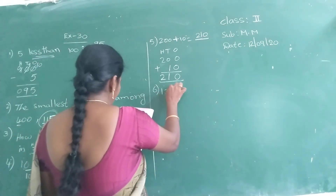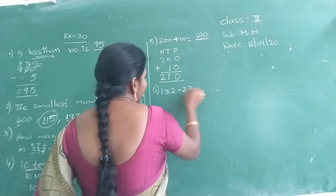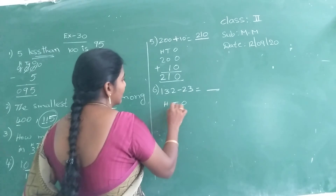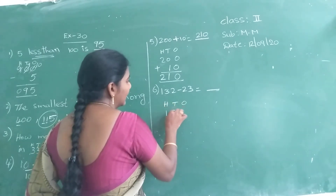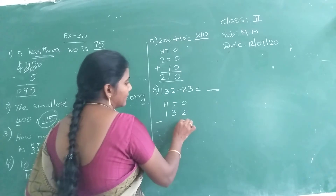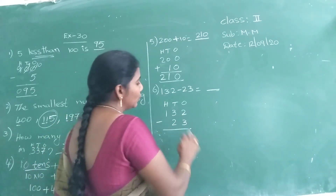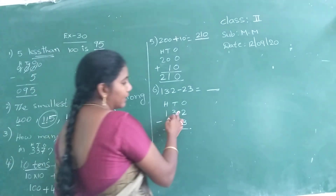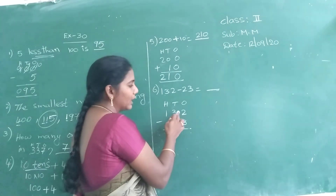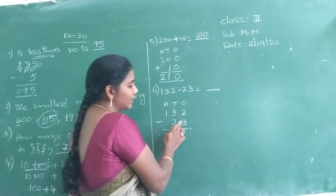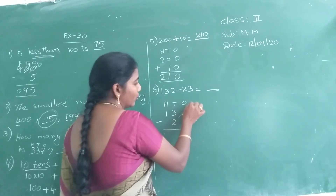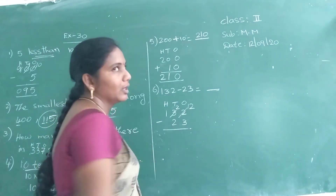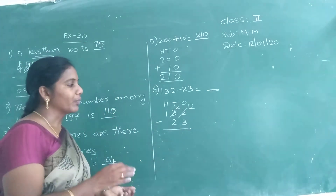Next problem: 132 minus 23. Start from the ones place: 2 minus 3. You can't subtract 3 from 2 — 2 is smaller, 3 is greater. So take borrowing. 2 becomes smaller, 3 becomes 2. Now open 12 fingers and start counting from 3 onwards.